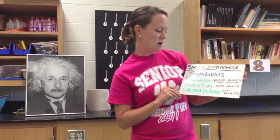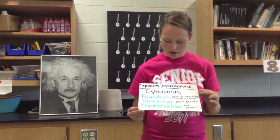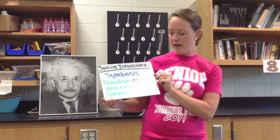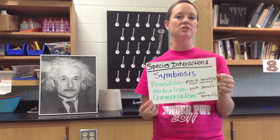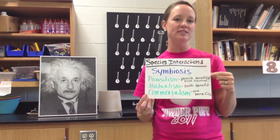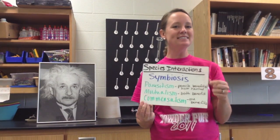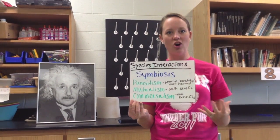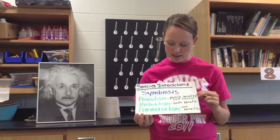Our last type of species interactions are symbiosis, and there are three types we're going to concentrate on. The first is parasitism — that's where the parasite benefits and the host is harmed. You're going to have a parasite living on or in a host. Examples include tapeworms, which live in your stomach and harm the host, and heartworms in dogs and cats.